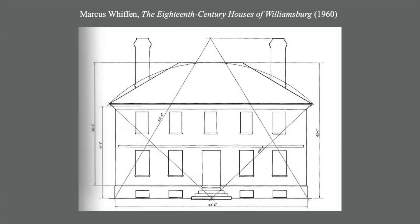We see in this analytical diagram how the facade relies on both a right and equilateral triangle, and other geometric forms, for its proportions. Such consideration of geometry in facade design was common practice in the 18th century.